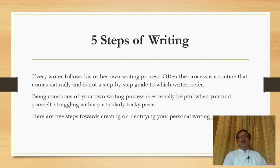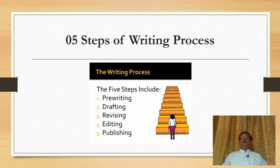As a beginner, you must try to understand all these steps and follow them if you want to be a good writer. Here are the five steps of the writing process: the first is pre-writing, the second is drafting, the third is revising, the fourth is editing, and the fifth is publishing. These are the different steps which every good writer should follow.